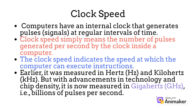Next in our agenda is clock speed. Computers have an internal clock that generates pulses or signals at regular intervals of time. Clock speed simply means the number of pulses generated by the clock inside a computer, and it indicates the speed at which the computer can execute instructions. Earlier it was measured in hertz and kilohertz, but with advancement in technology and chip density, it is now measured in gigahertz — that is, billions of pulses.